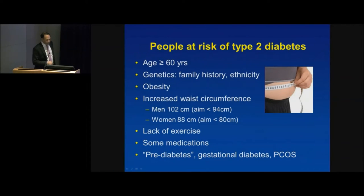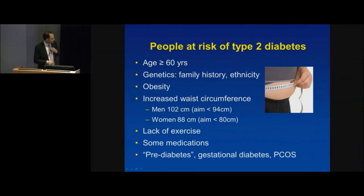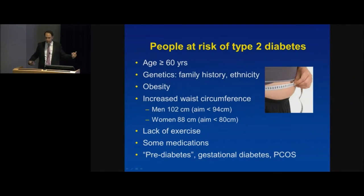Everyone should measure their waist circumference at home. In men, there's a higher risk of heart disease and diabetes with a waist above 102 centimetres — the target is less than 94 cm, measured around the belly button. In women, the target is 80 cm with a cut-off of 88 cm. The best predictor of diabetes risk is not overall weight but central fat — how much fat is around the organs, estimated by waist circumference.